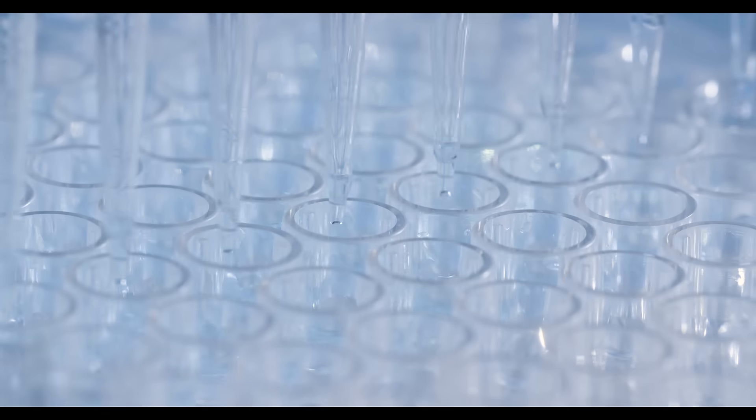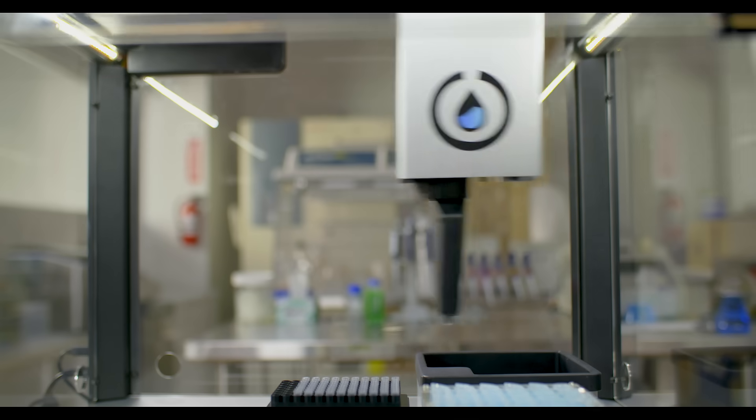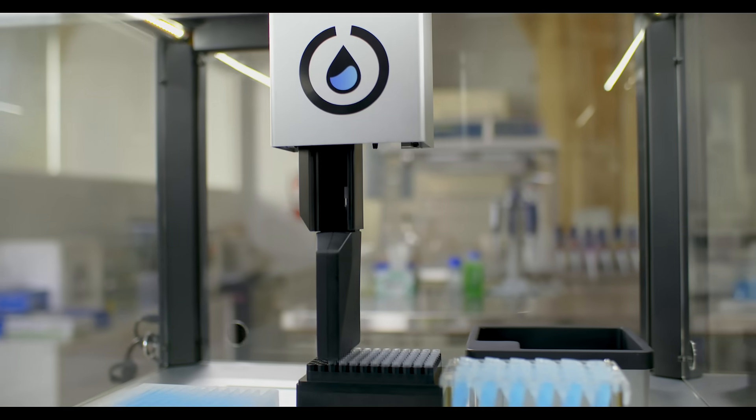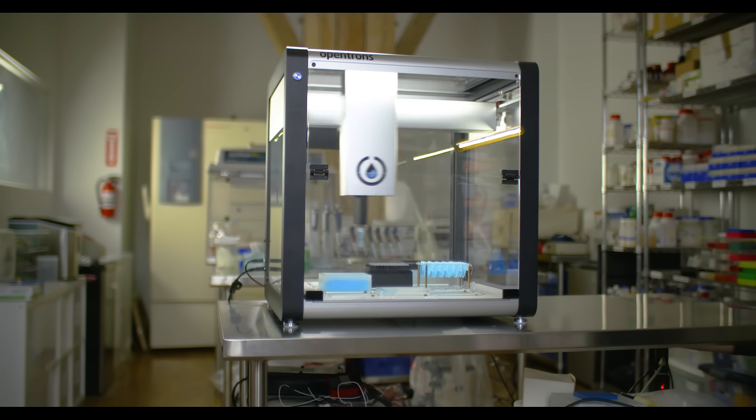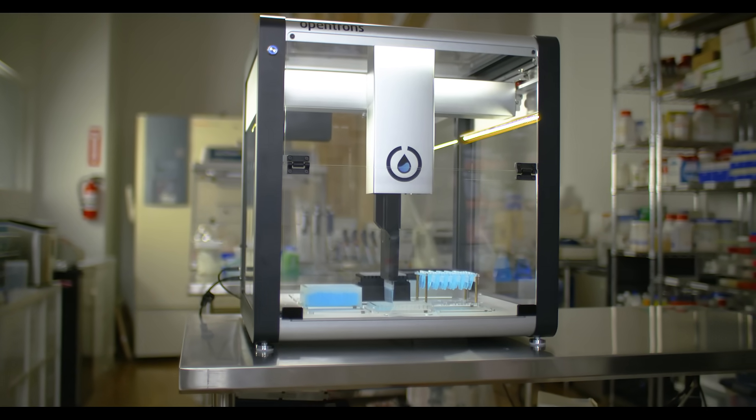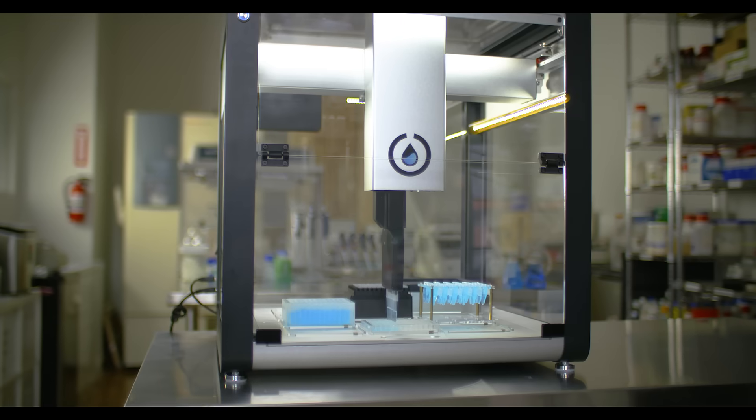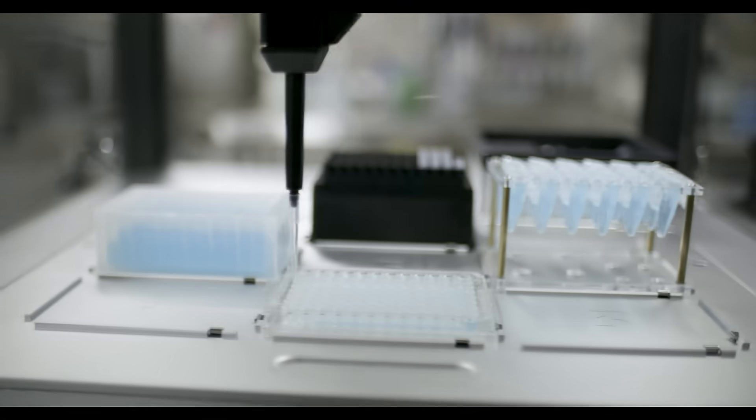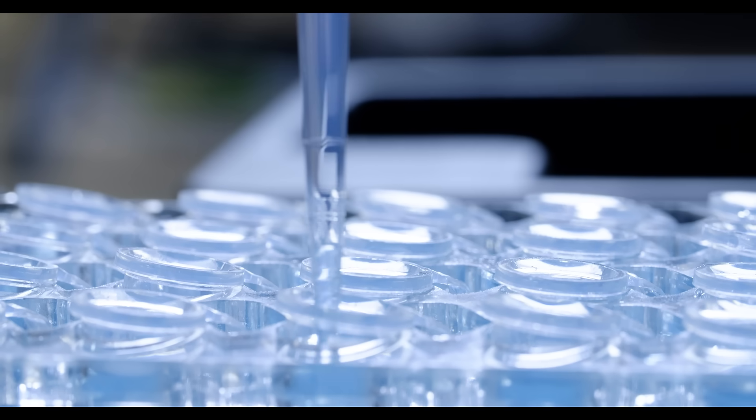So much repetitive pipetting goes into each discovery. And that's what Opentrons is for, getting your lab work done. This is the OT2, a personal lab robot that takes care of repetitive pipetting accurately and quickly. The OT2 transfers liquid using robotic pipettes